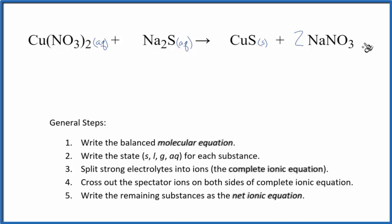And then nitrate compounds, those are going to be aqueous. We have our states, now we can split the strong electrolytes into their ions. That will give us the complete ionic equation, sometimes called the total ionic equation.